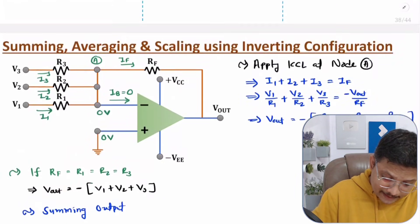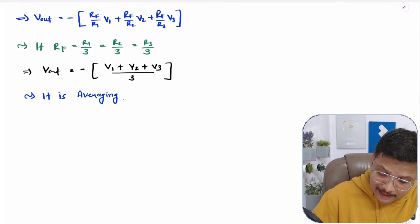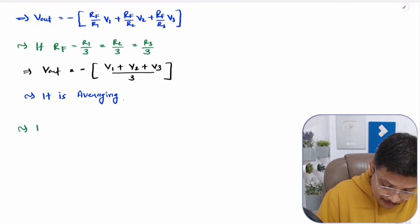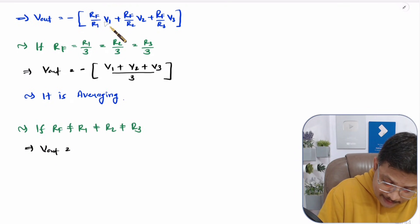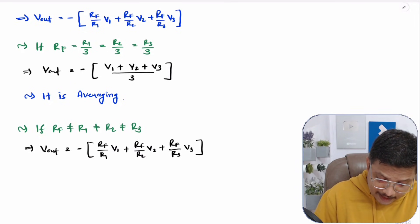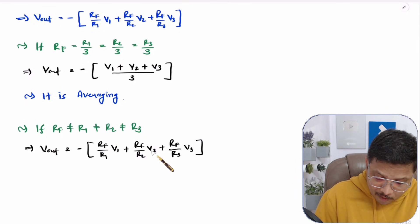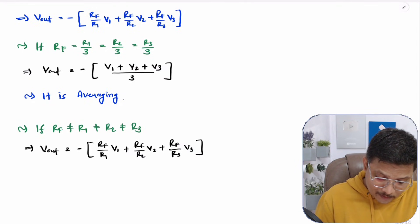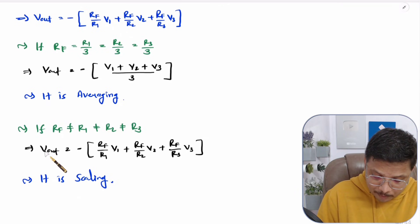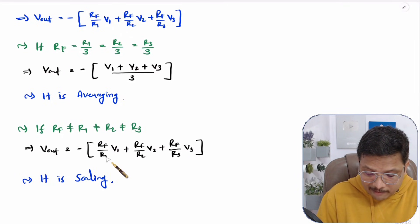For scaling, we have RF ≠ R1 ≠ R2 ≠ R3. In that situation, the output Vout = −[RF/R1·V1 + RF/R2·V2 + RF/R3·V3]. Each input is scaled by its respective ratio RF/R1, RF/R2 and RF/R3. This is scaling.